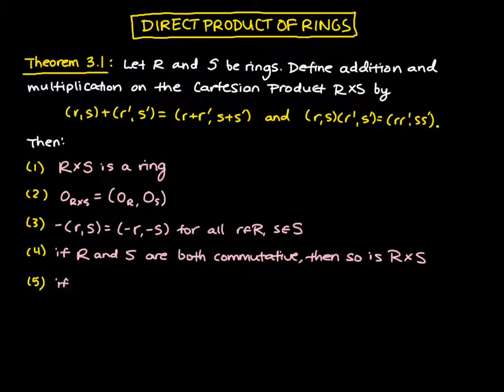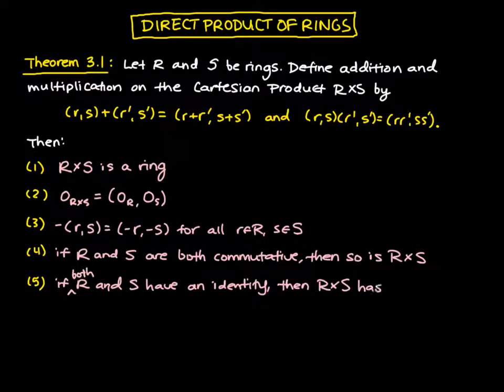Lastly, if R and S have an identity, then the direct product of R and S also has an identity. And that is given by the identity in R times S equal to the identity of R and identity of S. Very similar to how we define the zero element.